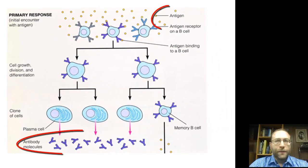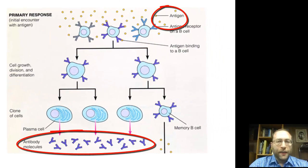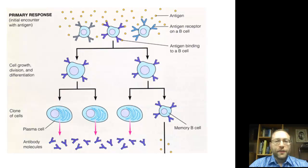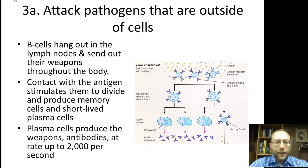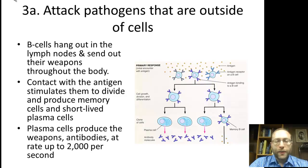It's very important to understand the difference between antigen and antibody — easy to confuse because the names sound similar. An antigen is something that provokes an immune response. An antibody is the weapon of this part of the immune system. We produce lots of them; each plasma cell lives for just a few days and produces and secretes up to 2,000 antibodies per second.